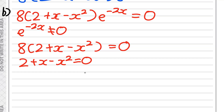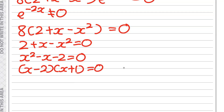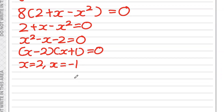We can factorise x squared minus x minus 2 as (x − 2)(x + 1) equals 0. So x equals 2 and x equals minus 1. These are the two x-coordinates, so now we need to find the corresponding y-coordinates.